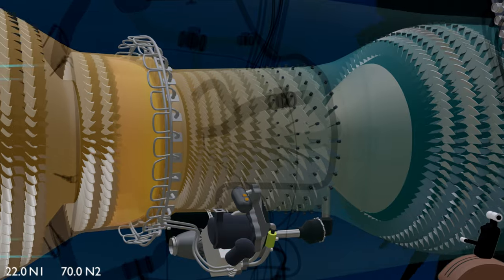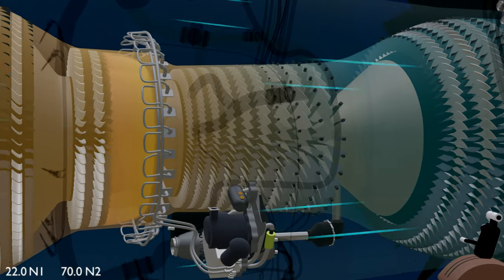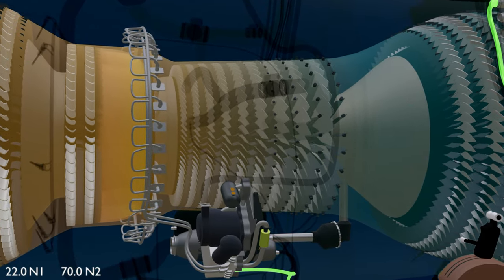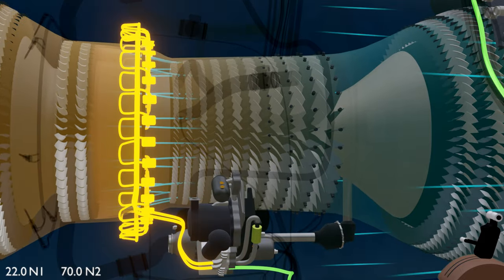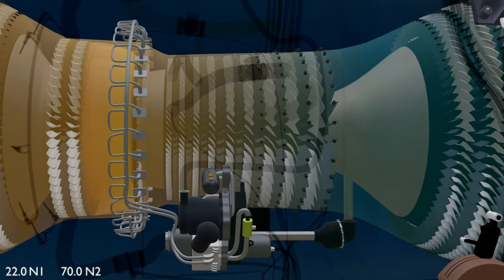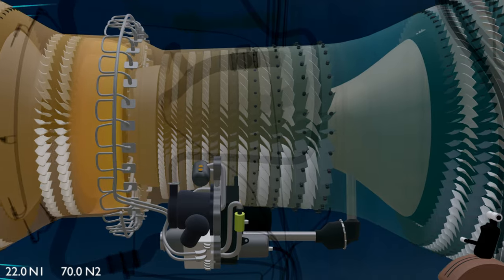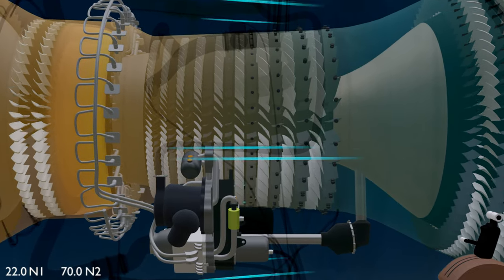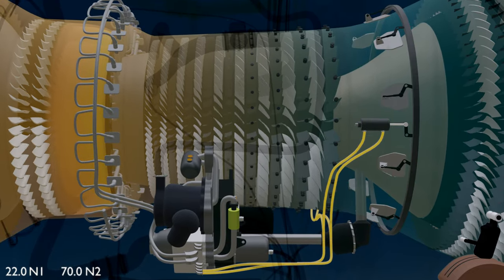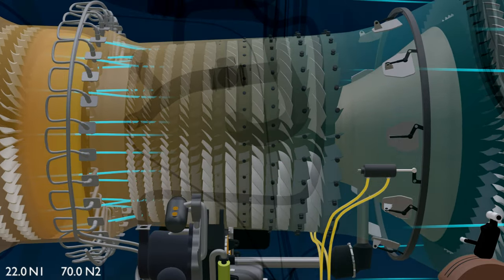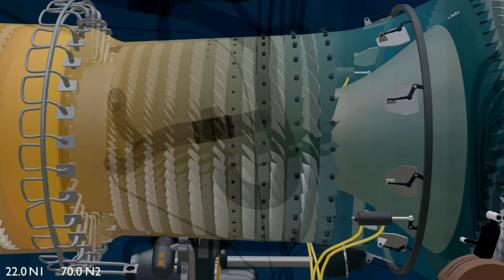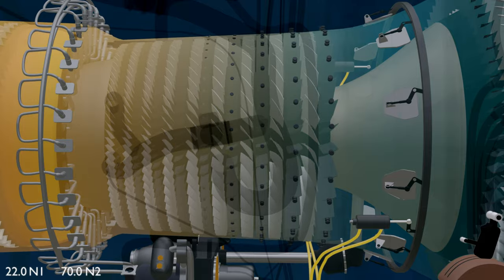Recognizing this, the EEC commands the hydro-mechanical unit to operate the variable bleed system. The HMU, apart from controlling the fuel for combustion, also controls the servo fuel system of the engine. It uses servo fuel pressure to operate the two VBV actuators. The actuators with the help of bell crank and unison ring control the 10 bleed valves located behind the LPC casing.